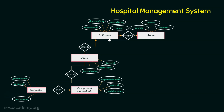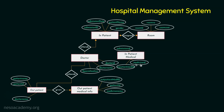Now let's move to inpatient medical information. This entity contains attributes such as inpatient medical ID, medicine ID, and admission ID. This inpatient medical information is linked with the inpatient entity using the same given relationship, and I am going to maintain a one-to-many relationship between inpatient and inpatient medical information. We can see the ER diagram is being built up slowly.